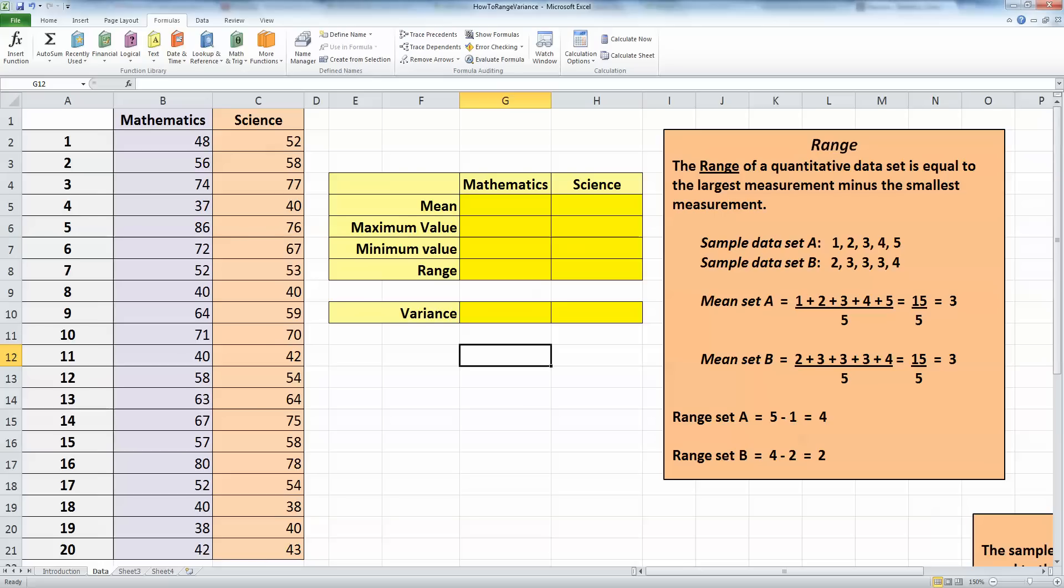These are two measures of variability and the range of a quantitative data set is a simple one to calculate. It's equal to the largest measurement minus the smallest measurement.